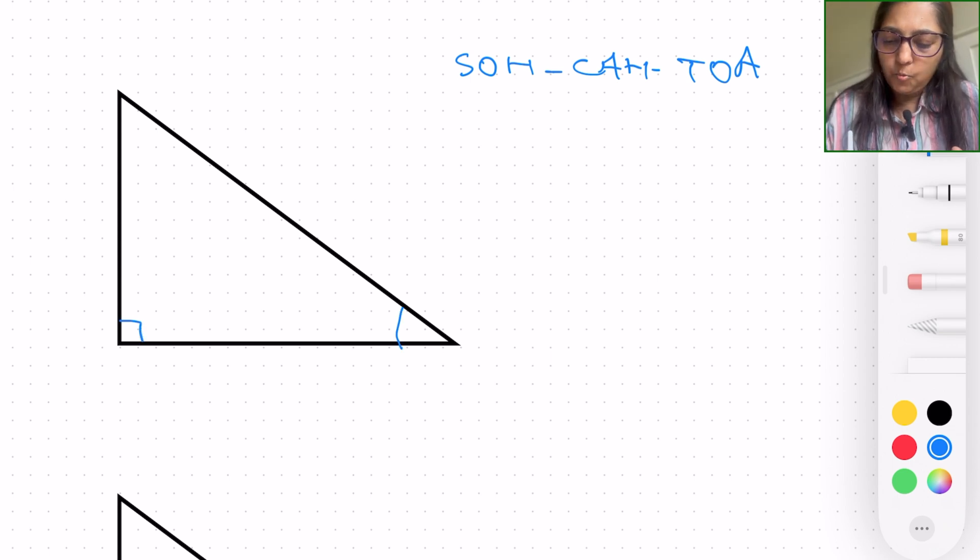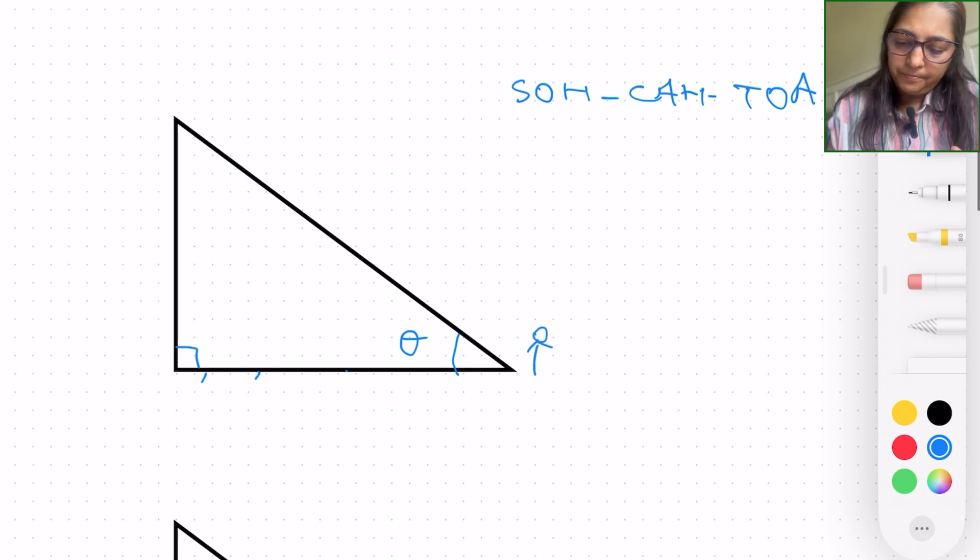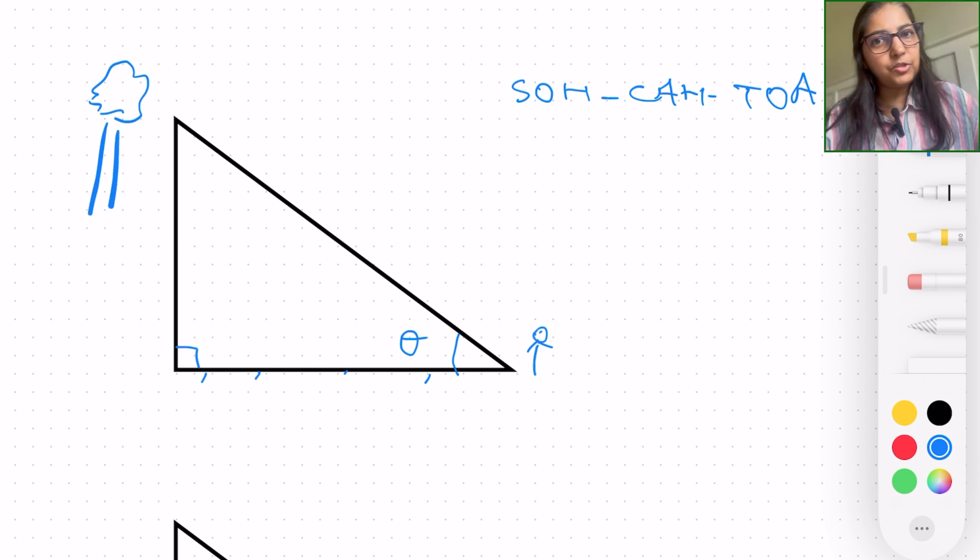We're going to make this one angle 30 degrees. Let's say we are standing right here at this position and there's a tree. This is ground. And there's a tree right here. We want to measure the height of this tree while standing here. How do we do that? That is one of the applications, very simple, basic application of trigonometry.